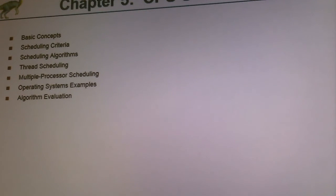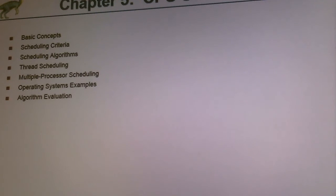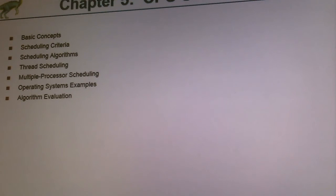We're going to talk about the basic concepts and scheduling criteria — what are you looking for in a process, what is the criteria to choose a different algorithm for each process or the same algorithm for all. It depends on the operating system and your application. We'll also cover thread scheduling. In some operating systems, processes and threads are different things.